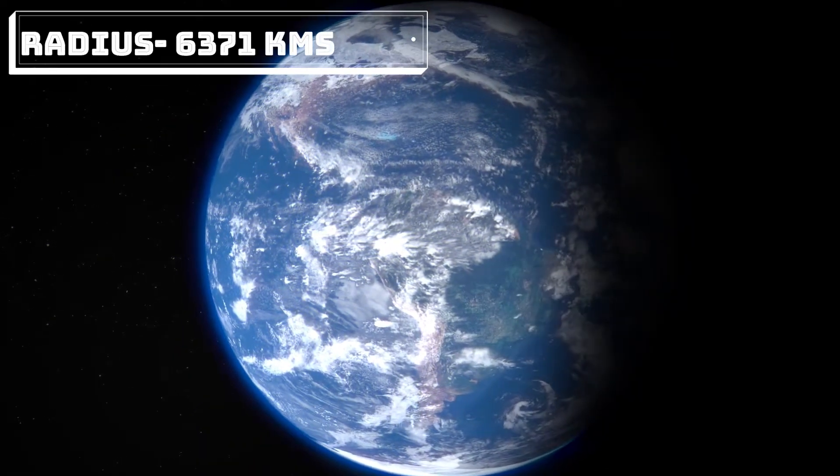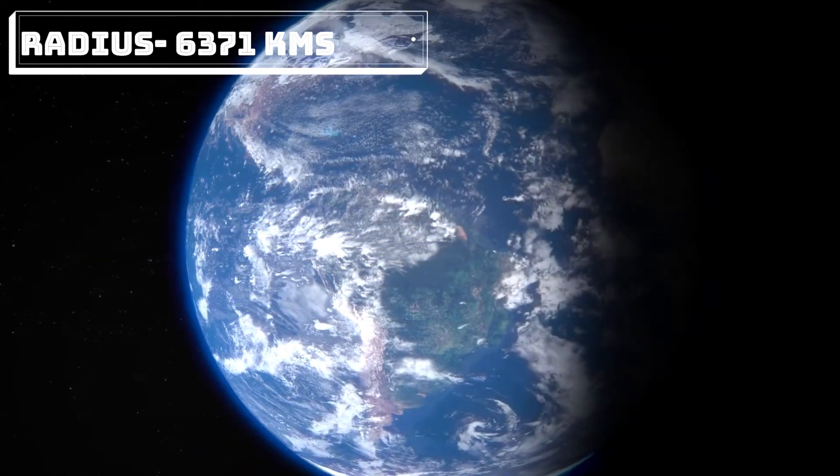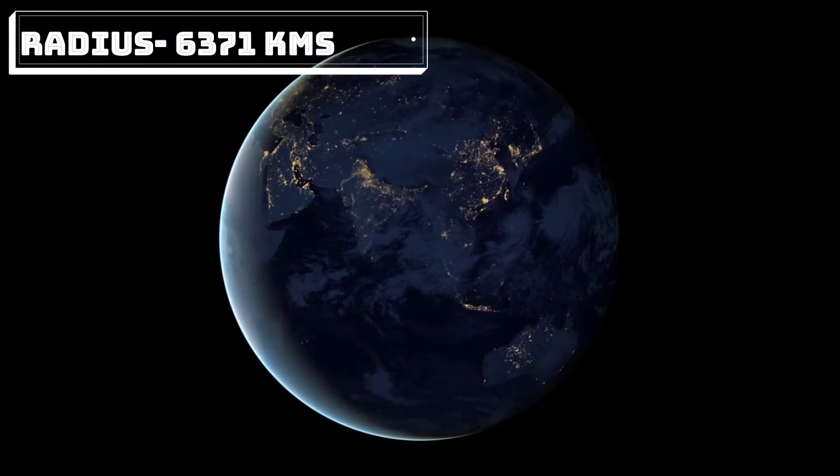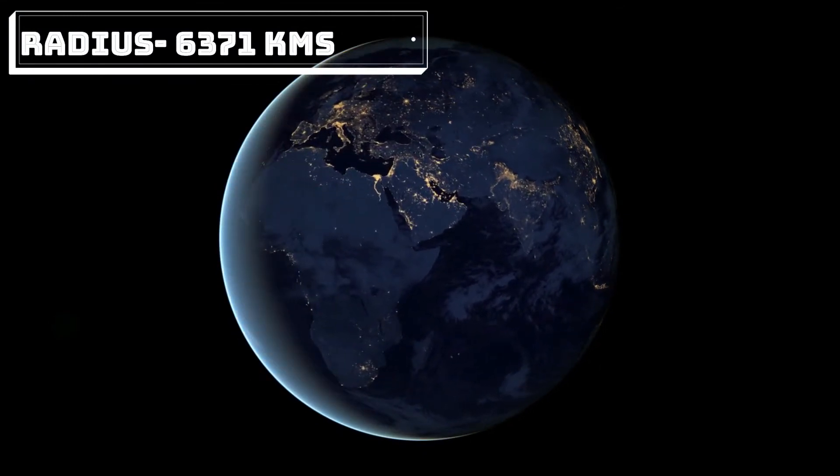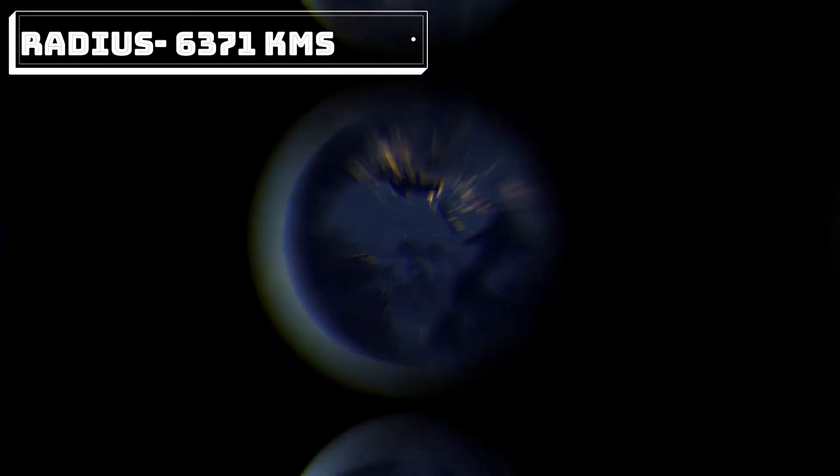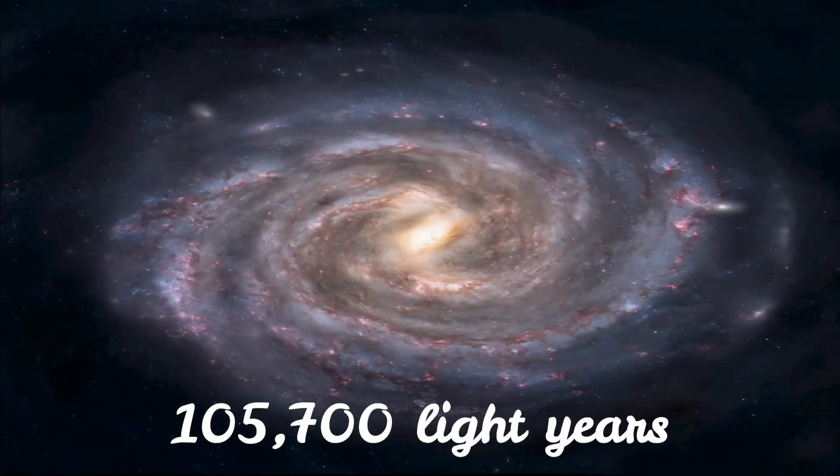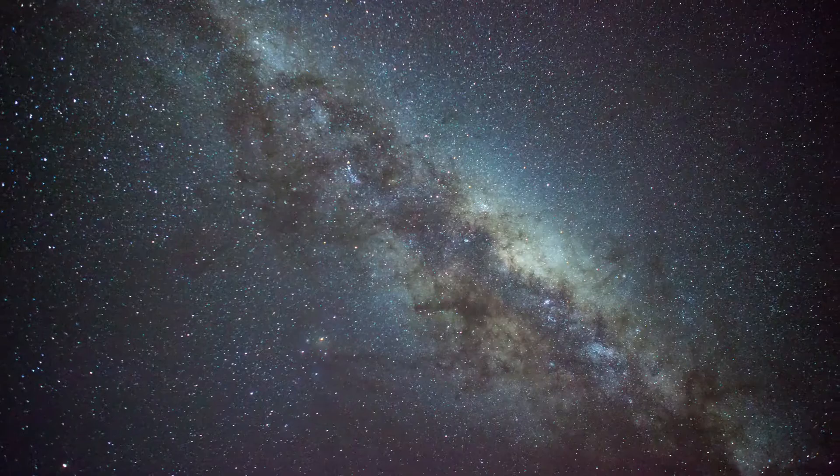We know the planet Earth, the blue gem we live in, is 6,371 kilometers in radius or 12,742 kilometers in diameter. When we compare the size of the Earth to the galaxy, which is 105,700 light years across, Earth is just a very small dot.